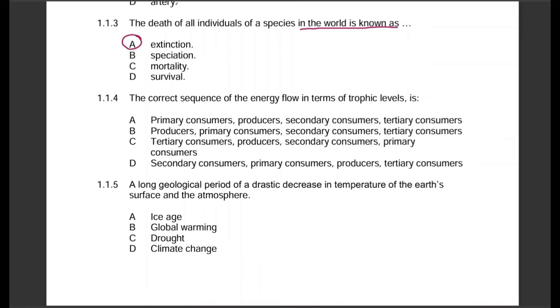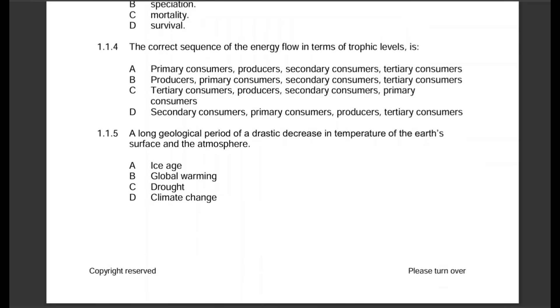Question 1.1.4: The correct sequence of the energy flow in terms of trophic levels. Remember when you're answering these questions, you have a paper and pen or pencil and you're also attempting to answer. Feel free to pause the video whenever you want so you can try to answer before I say them out. In order to eliminate the incorrect ones, we start with producers. Producers should be first, then primary consumers, secondary consumers, and tertiary consumers. The most correct one is B, and that's two marks.